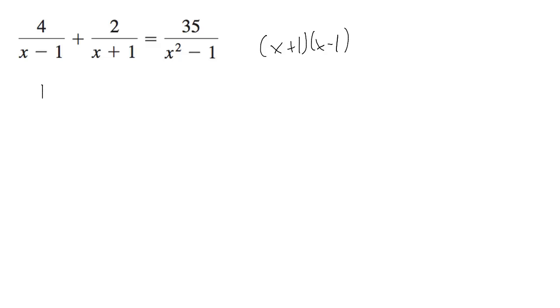So on top here is going to be 4 times (x plus 1) plus 2 times (x minus 1), all over x squared minus 1.